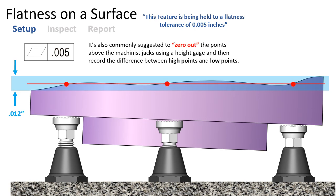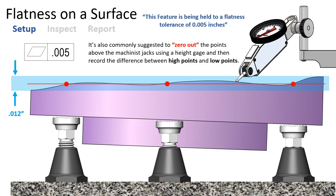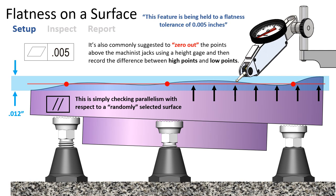A lot of experts recommend using three machinist jacks and adjusting them so the points directly above those jacks are perfectly level to each other — in other words, your indicator zeros out at each one of those points as you traverse over them. You then traverse the indicator back and forth and record the highest point and the lowest point with respect to this new zero. While this is definitely a better option, this is still simply checking parallelism to a randomly selected surface, because we randomly selected where those three points would be based on where we located our machinist jacks — we've selected a random plane created by three points from the surface.